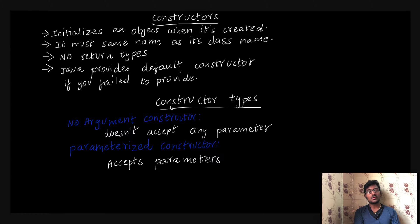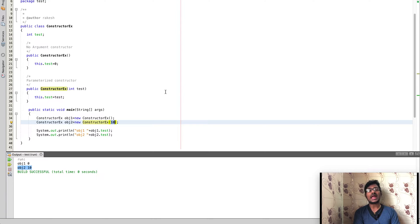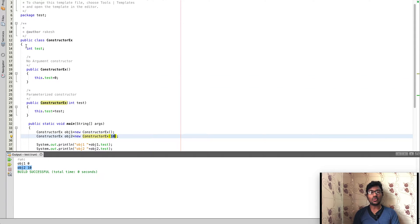There are two types of constructors: a no-argument constructor and a parameterized constructor. As the name suggests, the no-argument constructor won't accept any parameters at all, whereas the parameterized constructor will accept parameters. These are the two basic differences between them, and we will explain that using some example code.